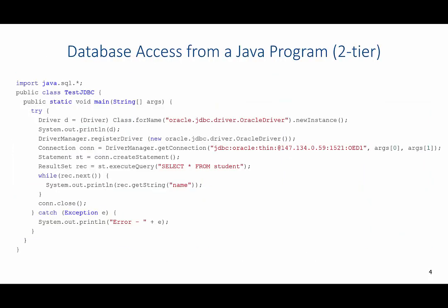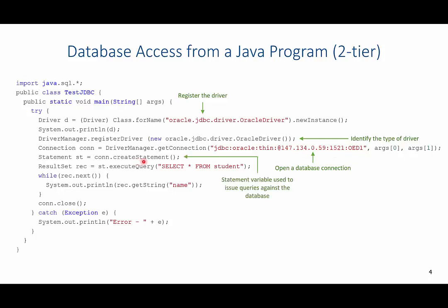Here's an example of a Java program using a two-tier network. As you can see, we have an Oracle driver that we are going to register. In this class we focus more on MySQL, but this illustrates how it would work in a different environment. We identify the type of driver, establish the database connection using an IP address and port for the Oracle server, then create a statement and execute a query. This query pulls a list of all students from the student table.